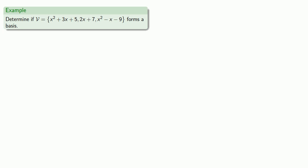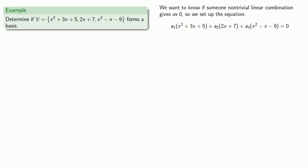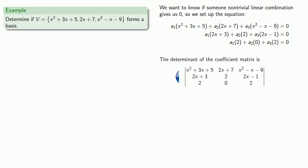For example, suppose our set of functions is x² + 3x + 5, 2x + 7, and x² − x − 9, and we want to know if these form a basis — specifically, are they independent? We set up the equation and note there are three unknowns a1, a2, and a3, so we need three equations, which we obtain by differentiation. The determinant of the coefficient matrix — the Wronskian — turns out to be zero. This means the original equation has non-trivial solutions, so the vectors are not independent, and v does not form a basis.